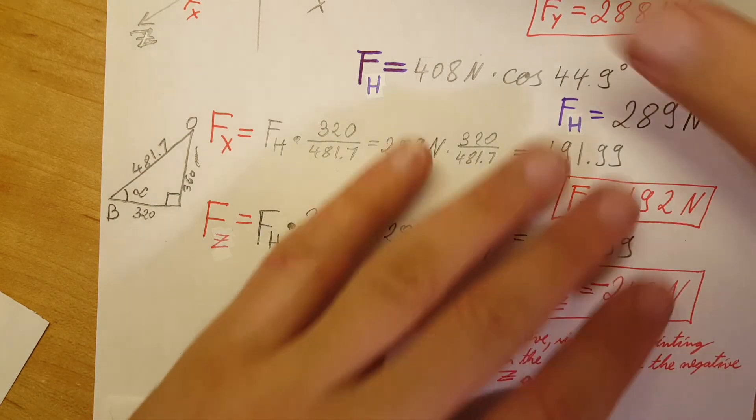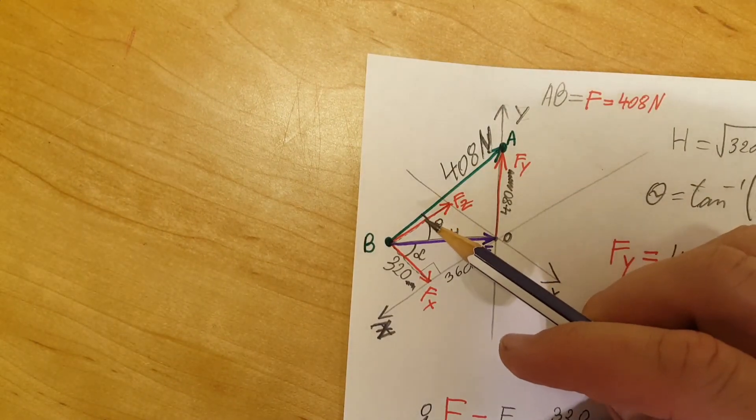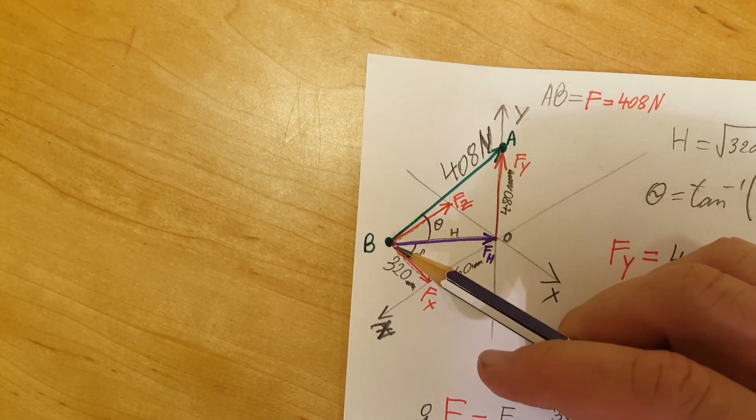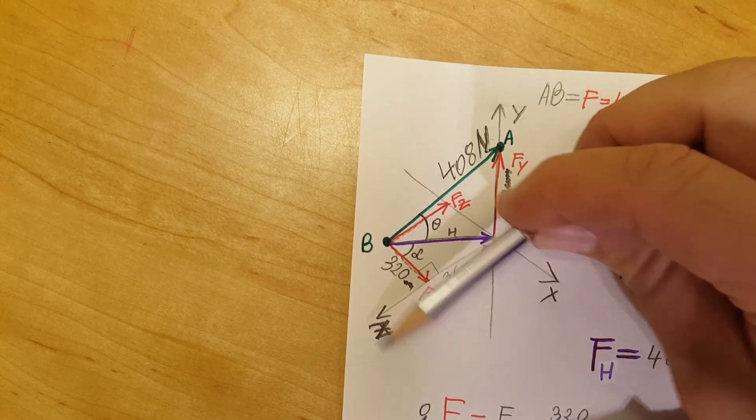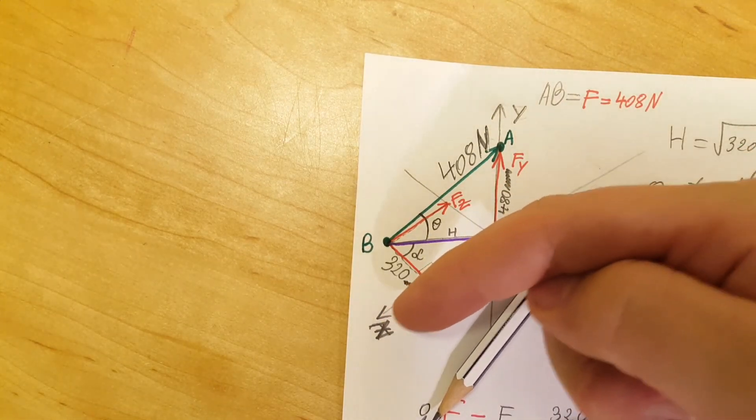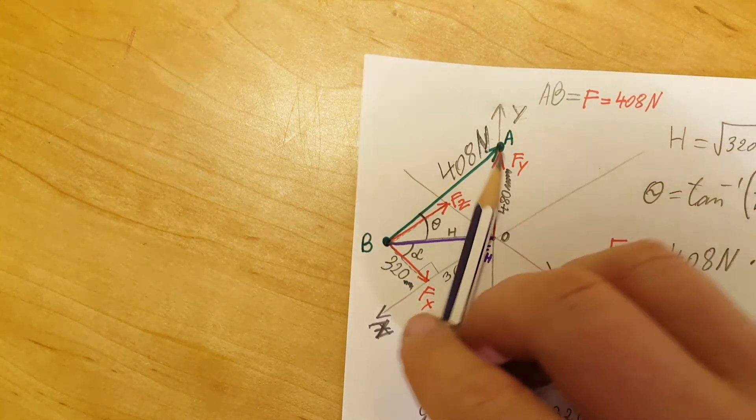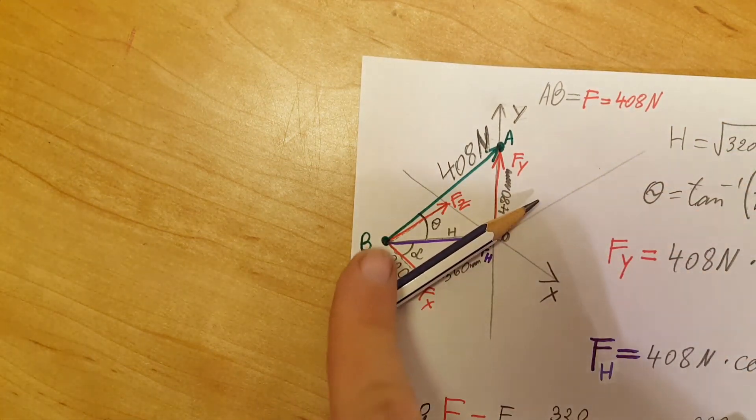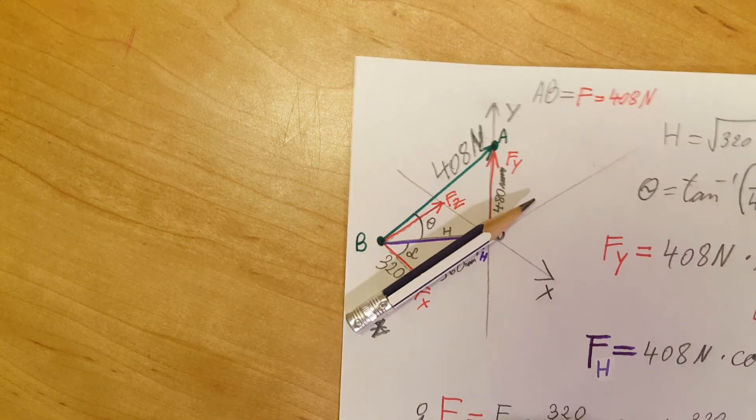Because since it is pointing in the direction of the negative Z axis, if we look closely we can tell that our Z component, if it would be pointing this way towards positive Z, then it would be 216. But it is pointing this way, so therefore we need to include a negative for our final value.